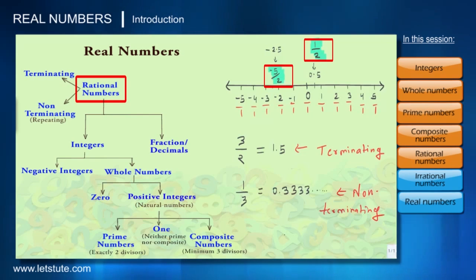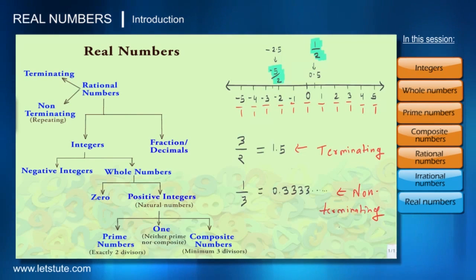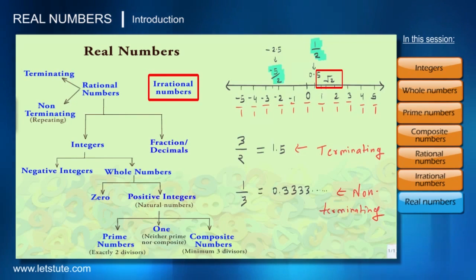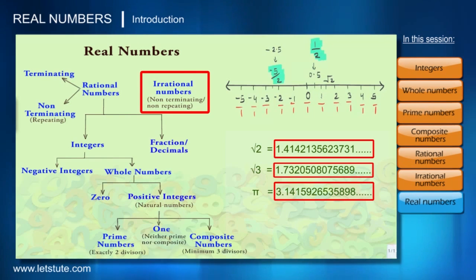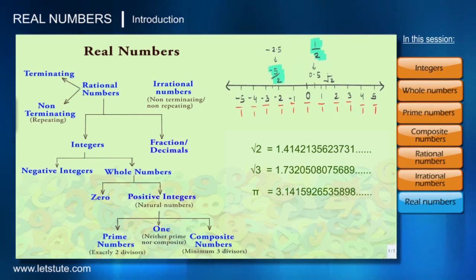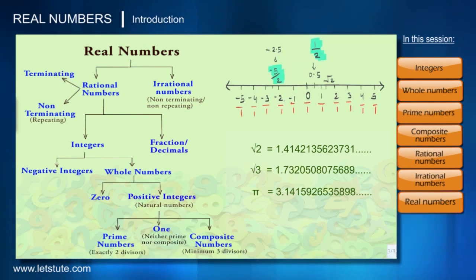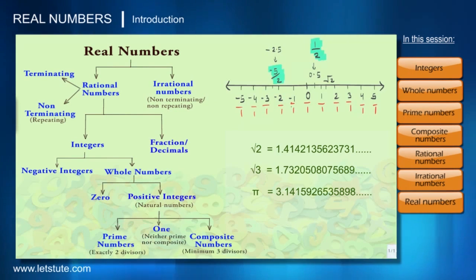There are also some numbers which can't be written as the ratio of integers. For example, between 1 and 2 we have the number √2, which can't be expressed as the ratio of two integers. These types of numbers are called irrational numbers. The decimal form of all irrational numbers is non-terminating and non-repeating. Rational numbers and irrational numbers together form real numbers. So under rational numbers we have whole numbers, integers, prime numbers, and composite numbers, and every point on the number line is considered a real number.